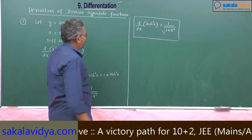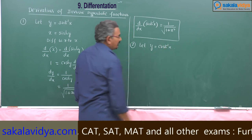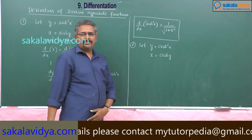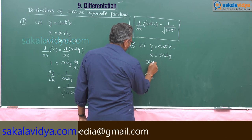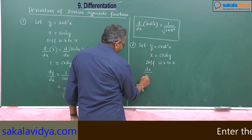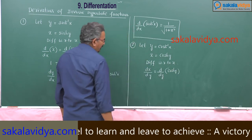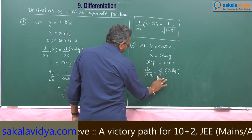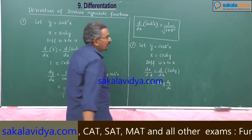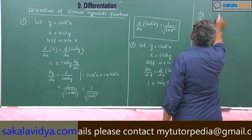Let us find out the second one. Let y is equal to cosh⁻¹(x). Now x is equal to cosh(y). Differentiating both sides with respect to x, 1 is equal to sinh(y) into dy/dx. So dy/dx is equal to 1 by sinh(y).